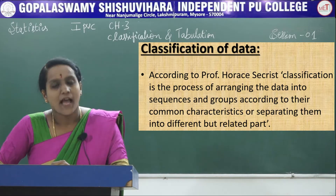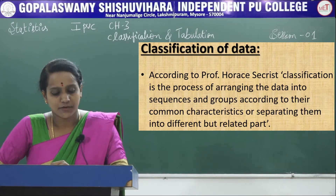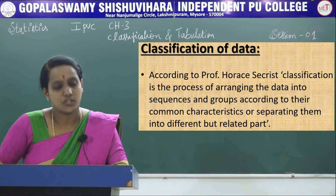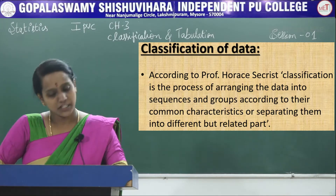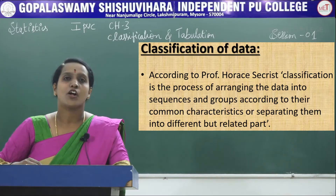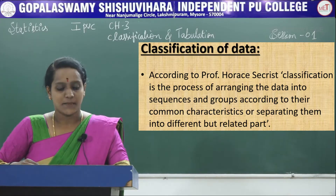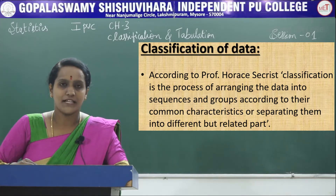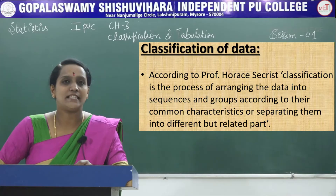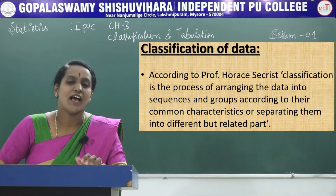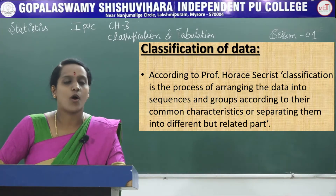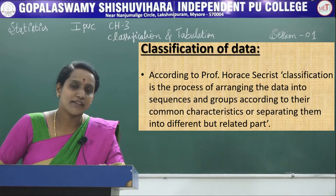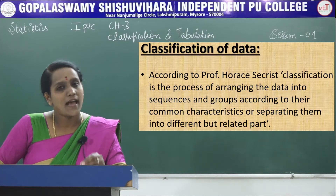Classification of data. According to Professor Arak Sekeris, classification is the process of arranging the data into sequences and groups according to their common characteristics, or separating them into different but related parts. First we identify common characteristics, group the data based on those common characteristics, and then separate it for analysis.